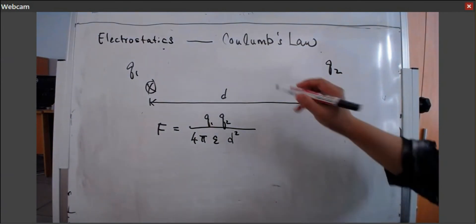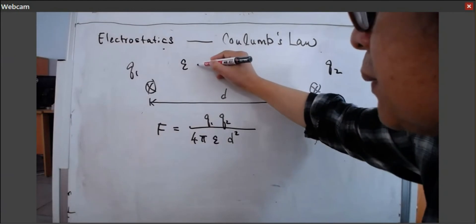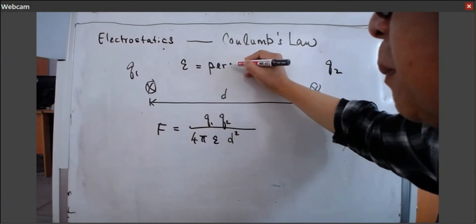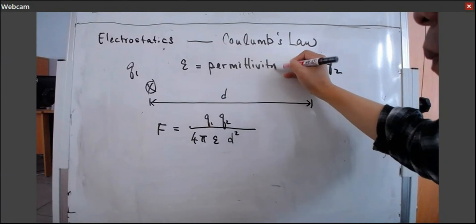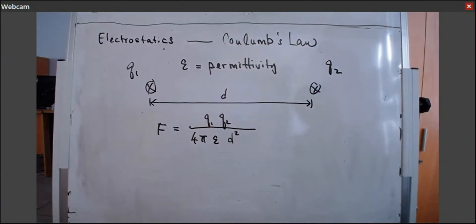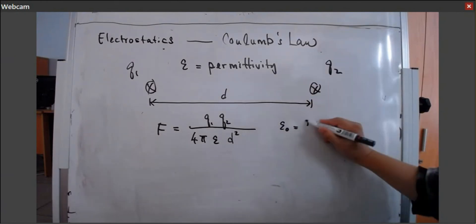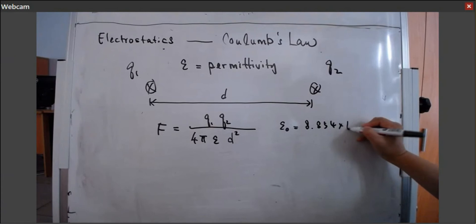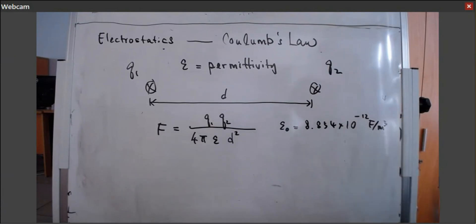Here, what is epsilon? Epsilon is the permittivity. Every material has its own permittivity — even vacuum has its own permittivity, and air has its own permittivity. The permittivity for air is given by 8.854 times 10 to the power of negative 12.